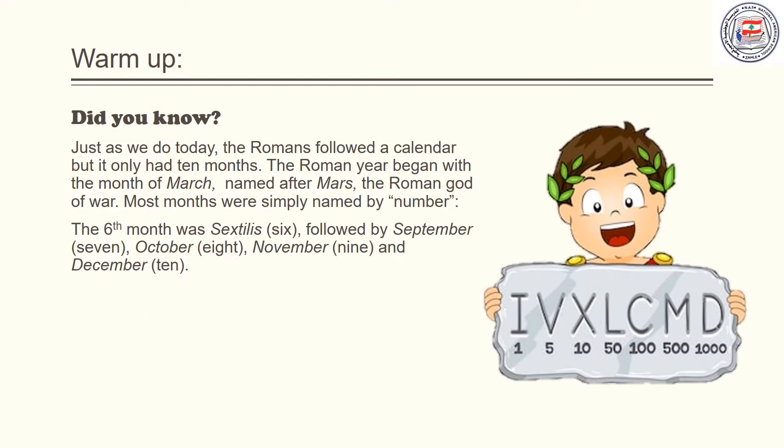Let's warm up. Did you know? Just as we do today, the Romans followed a calendar, but it only had ten months. The Roman year began with the month of March, named after Mars, the Roman god of war. Most months were simply named by number.